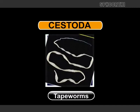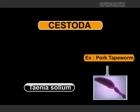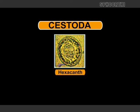Class Cestoda: These are tapeworms. Example: pork tapeworm, i.e., Taenia solium. Hexacanth larvae are seen.